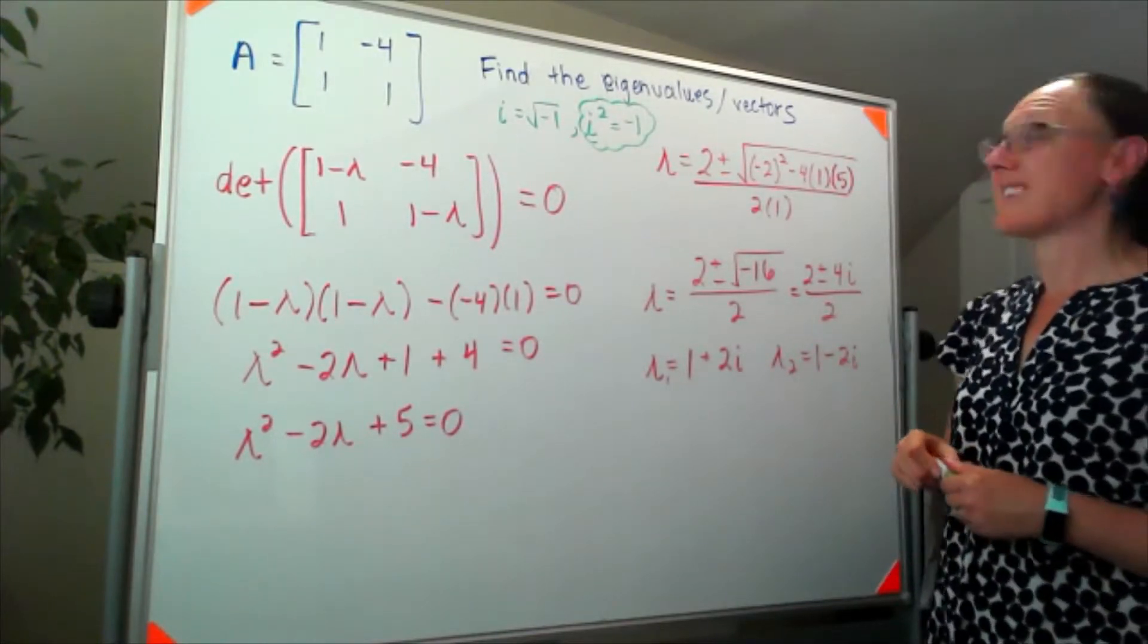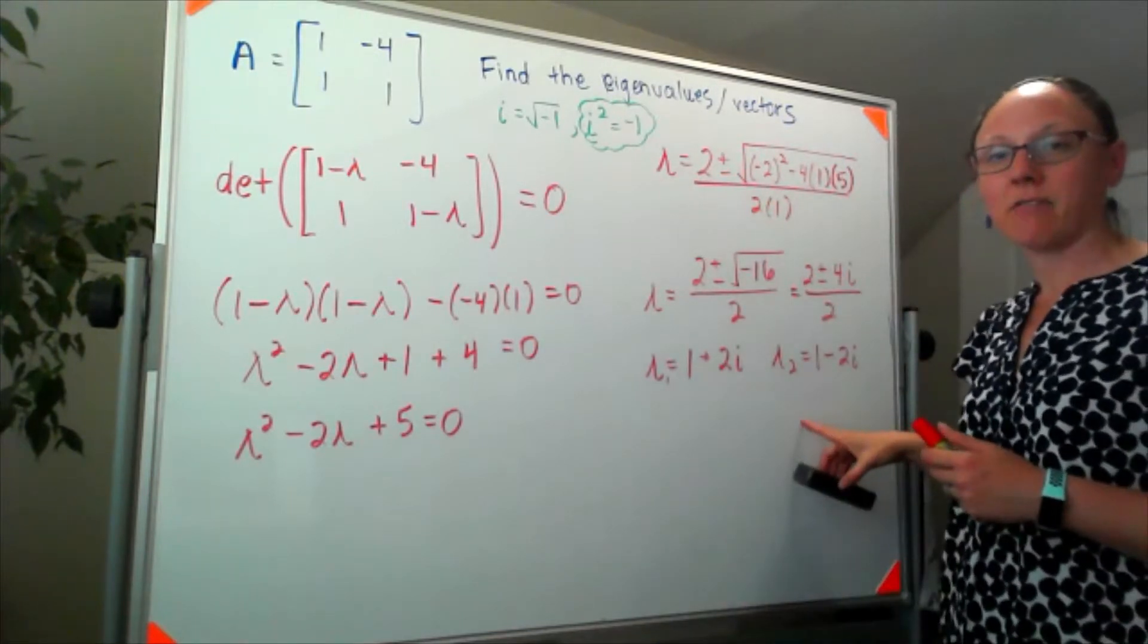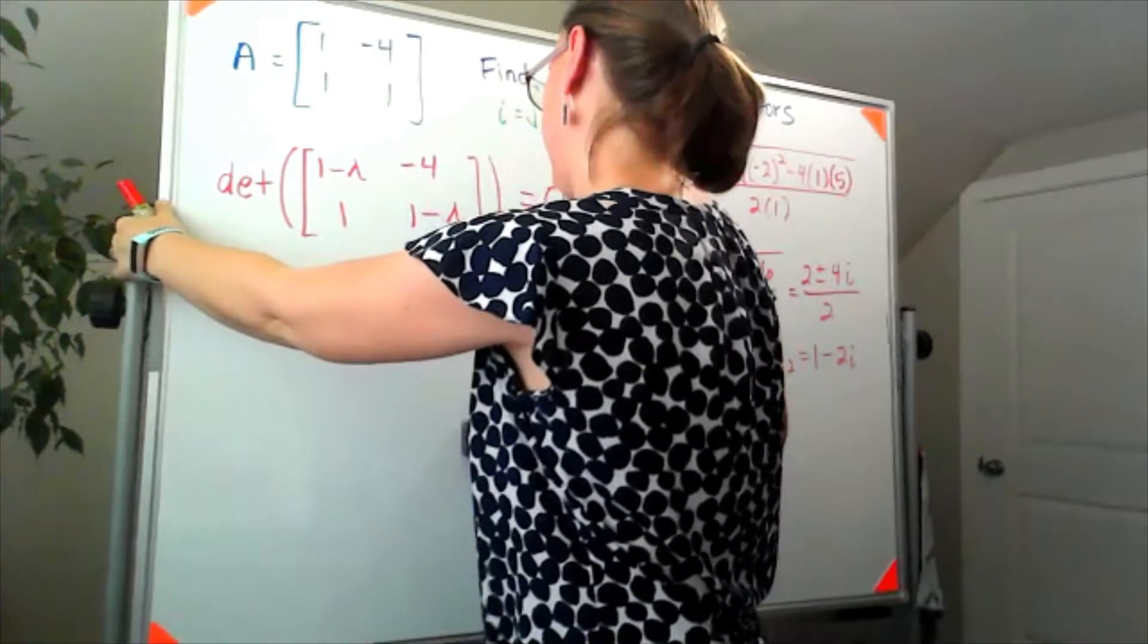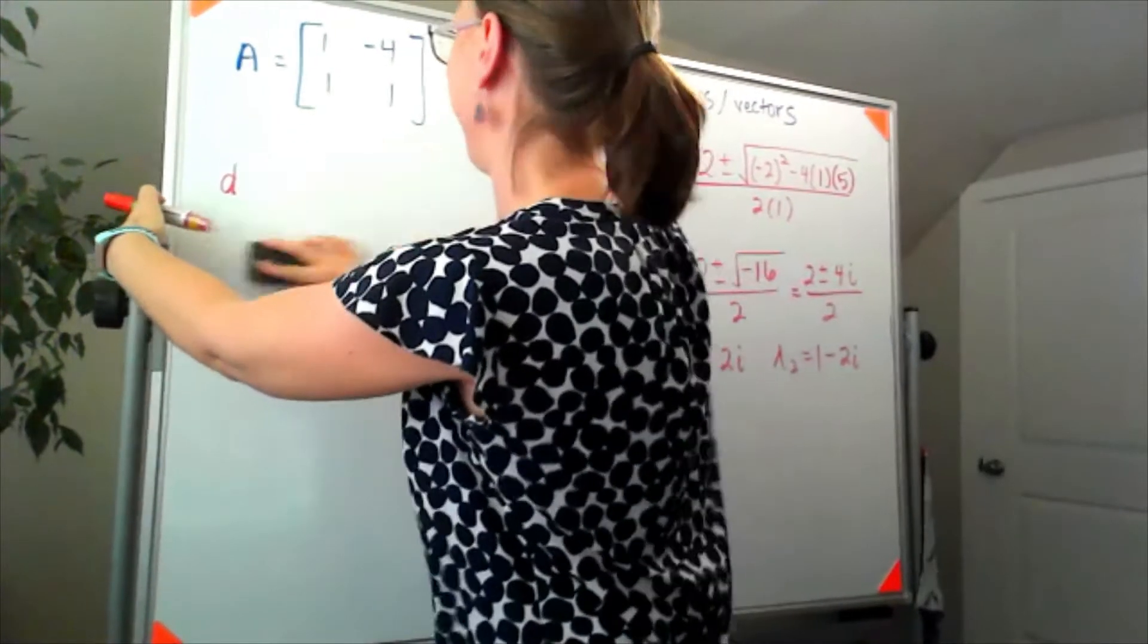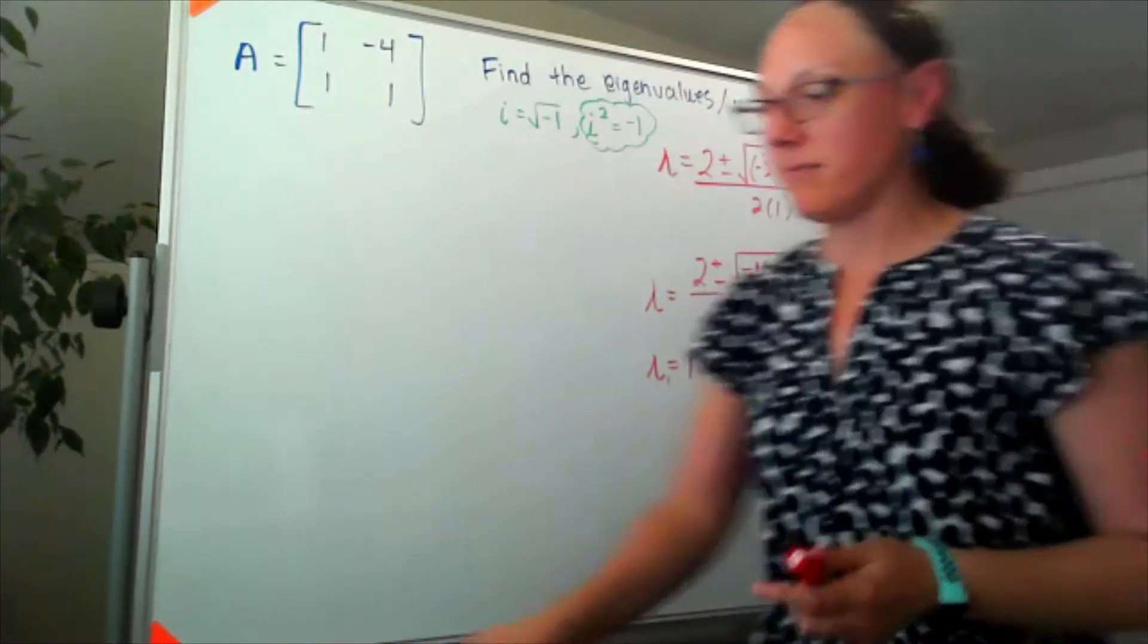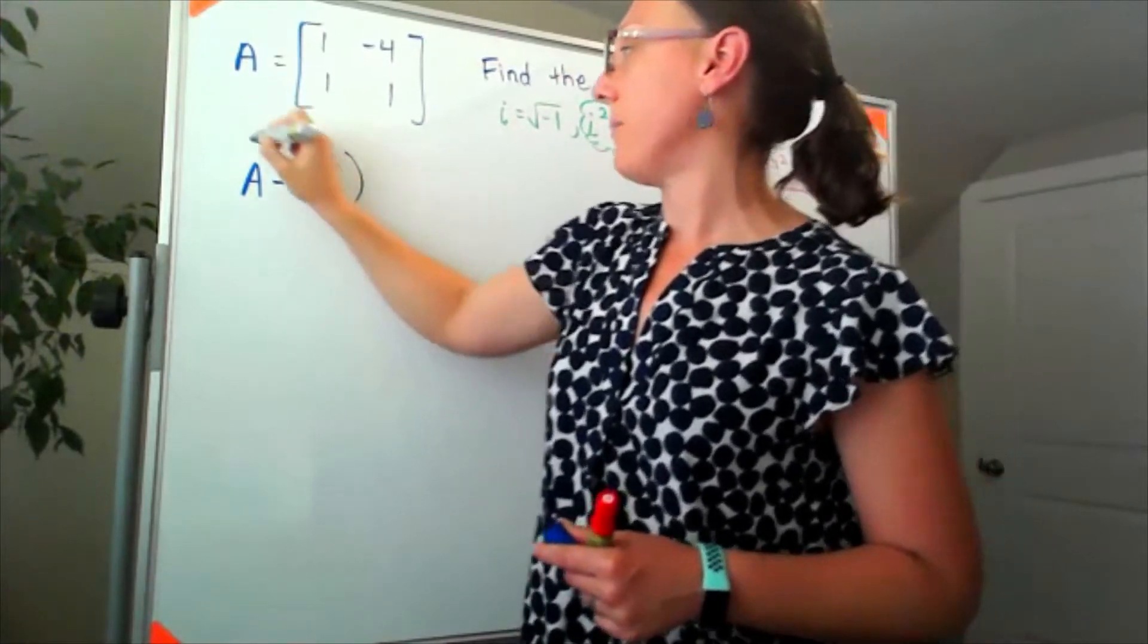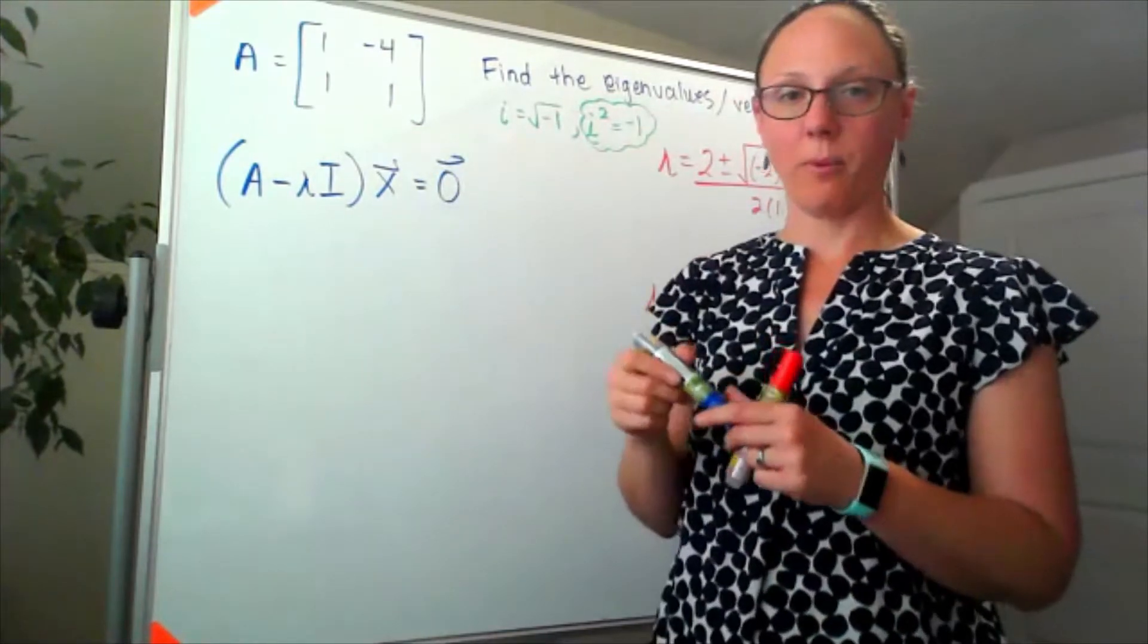So the next part of this is to figure out what our eigenvectors are. If you have complex eigenvalues, we are always going to have complex eigenvectors and they should come in complex conjugate pairs. To solve for our eigenvectors, the equation that we're headed back to is that the matrix A minus lambda I times our eigenvector x needs to be equal to the zero matrix.